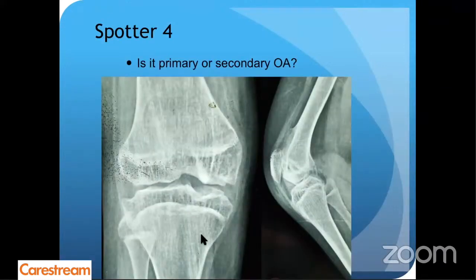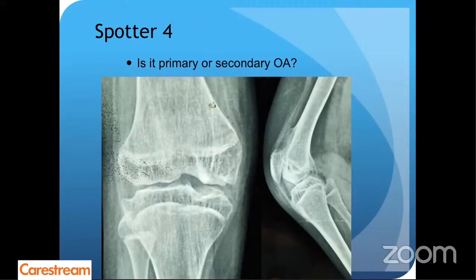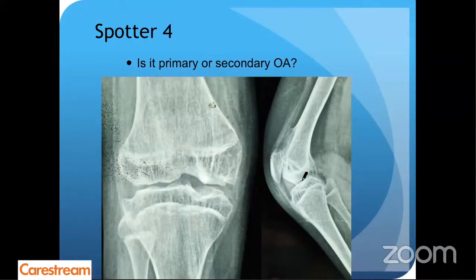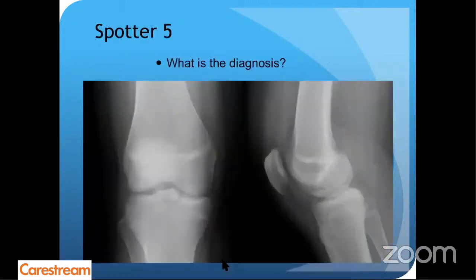Next — is this a primary or a secondary OA? Nobody is saying it's primary OA — very good. First, you can see there is a physis, so obviously this is a child. A child having primary OA is out of question. Secondly, you can see there is a lot of irregularity and erosions. So this was nothing but post-TB — that child had landed up into OA. So it was a secondary OA.